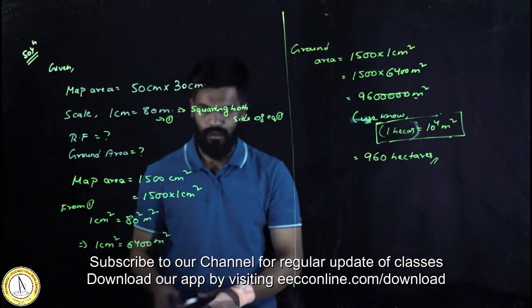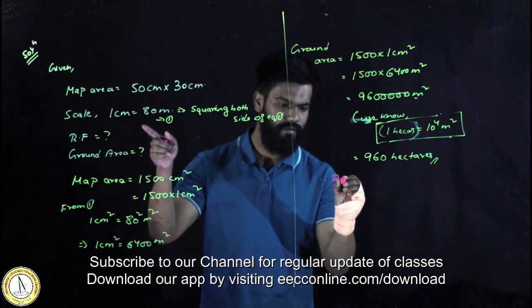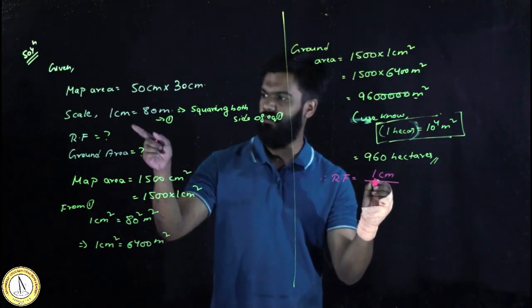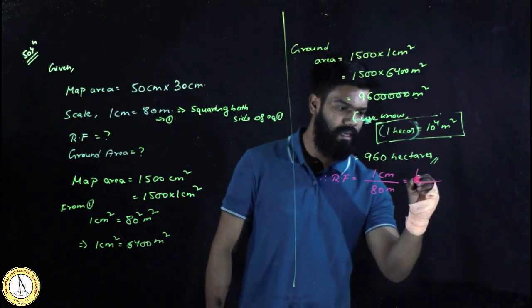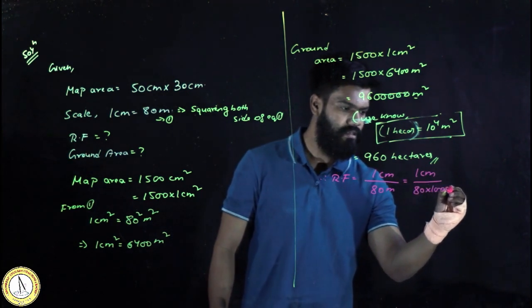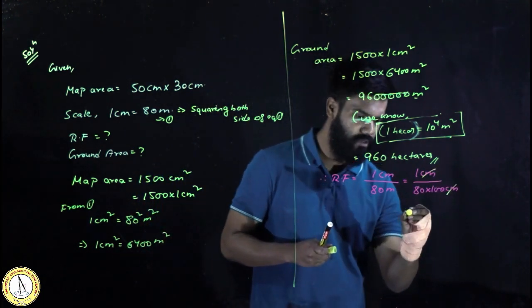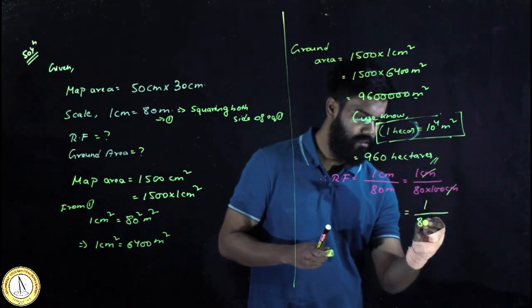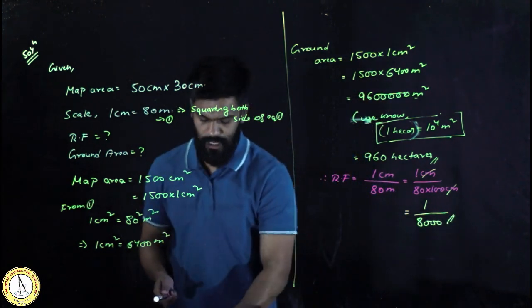Now it is also asked that I need to find the RF. For RF I can easily find out what will be the RF. RF will be 1 centimeter at the top and 80 meters at the bottom. I can write 1 centimeter by 80, convert it into centimeters, then cancel these out. I will be left with 1 divided by 8000. This is the RF of the village map.